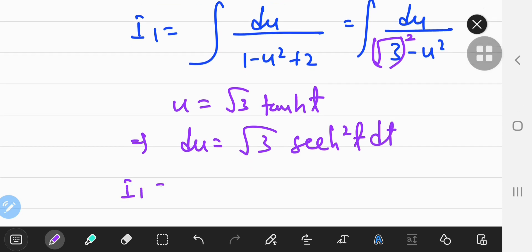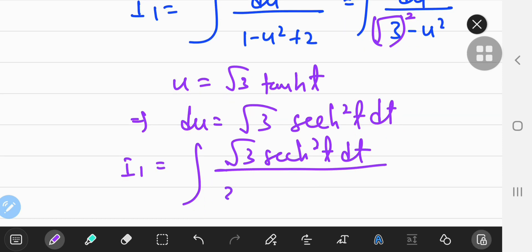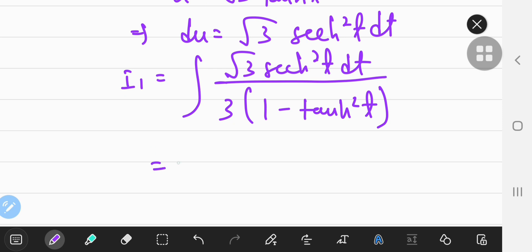Which implies that du equals square root 3 times secant hyperbolic squared t dt. So now i1 turns into this fancy integral, square root 3 secant hyperbolic squared t dt by 3 times 1 minus tan hyperbolic squared t. So what is 1 minus tan hyperbolic squared t? Well, that's just a secant hyperbolic squared.